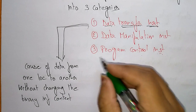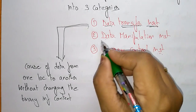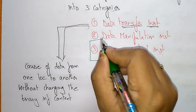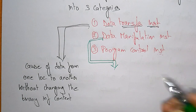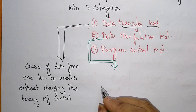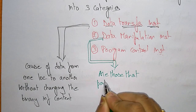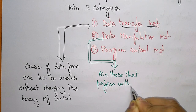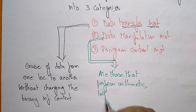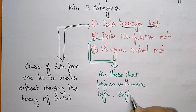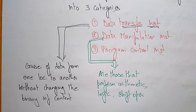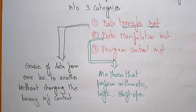Data manipulation instructions are those that perform arithmetic, logic, and shift operations. In manipulation, something is going to be changed in the content of the data — through arithmetic operations, logical operations, or shift operations. These are called data manipulation instructions.